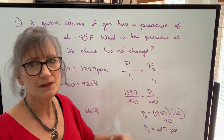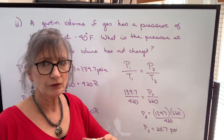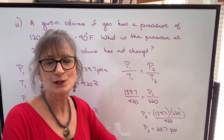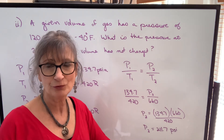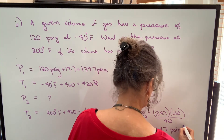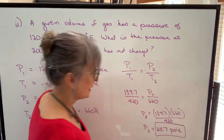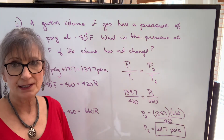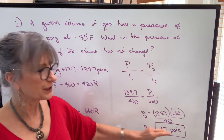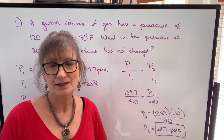Again, we have to note that it's absolute — when you put pressures into the formula they have to be absolute, and when you get a resulting pressure from the formula it's going to be absolute. If you want to know the pressure as a gauge pressure, subtract 14.7 from that and write it as PSIG.